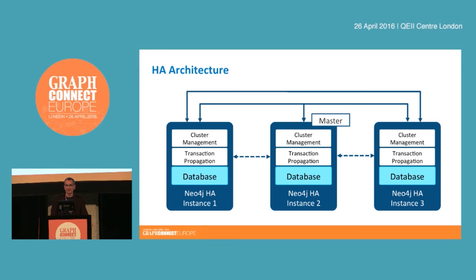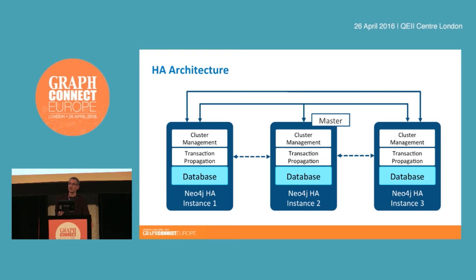Now let's look at the HA architecture itself. Today Neo4j in its clustered state is a traditional master-slave setup. In a cluster of three instances, one will at any point in time be acting as master, coordinating all writes to the cluster. The remaining instances will be in the role of slaves, polling the master at frequent intervals to pull transactions across and catch up. We have two different protocols: a cluster management protocol where instances agree on who is master, and a transaction propagation protocol where slaves pull the most recent transactions and update their own copy of the store.